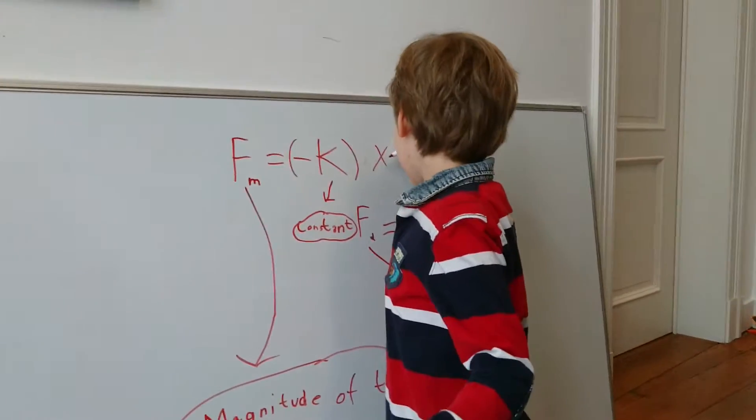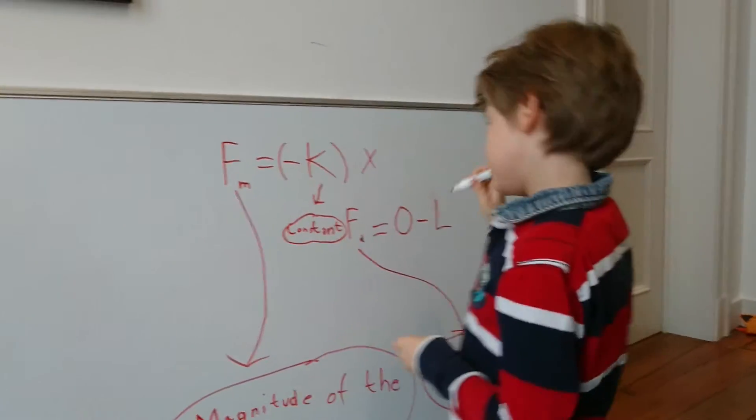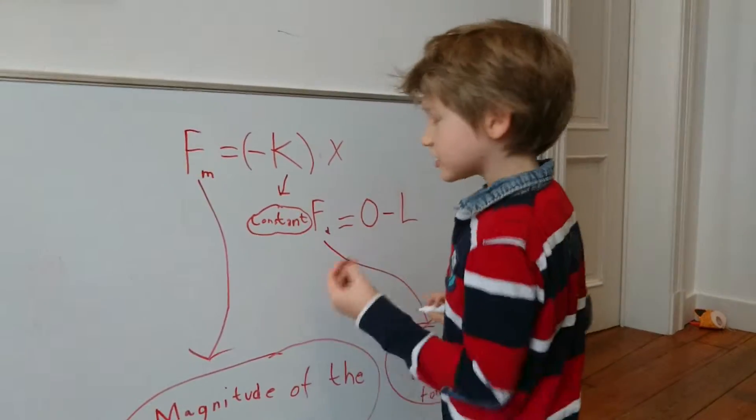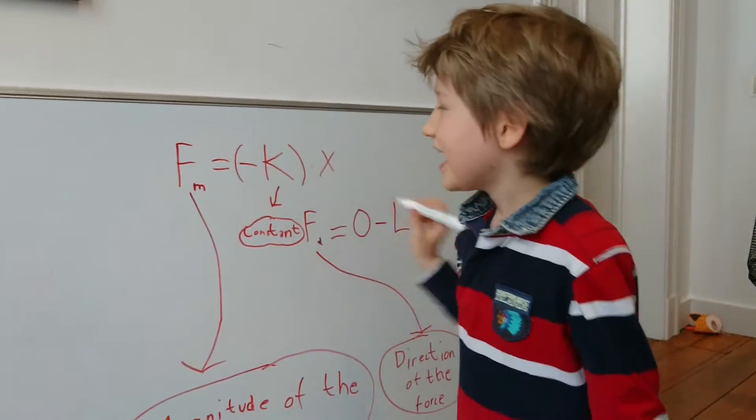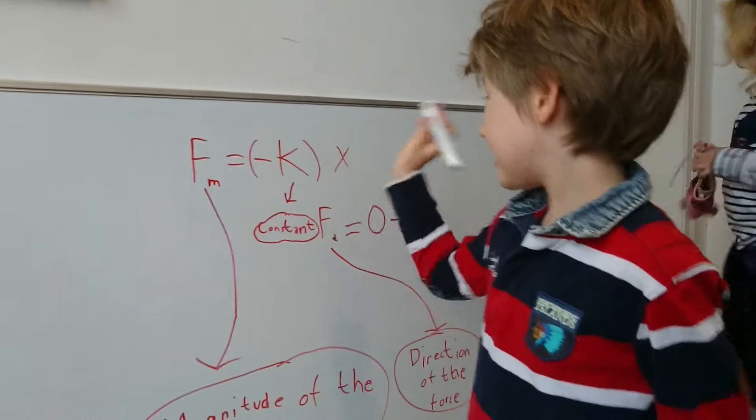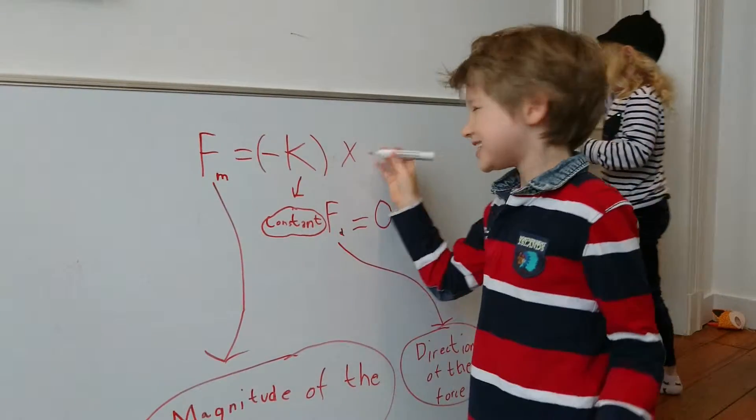We're going to take a look at what X is, the mysterious X. So we already established that FM is the magnitude of the force, K is a constant. What's X?